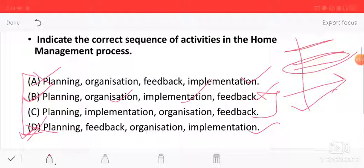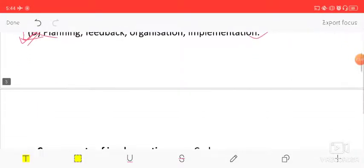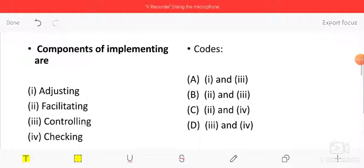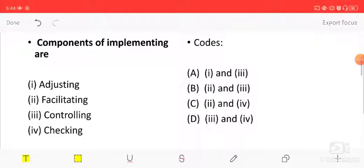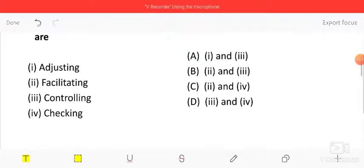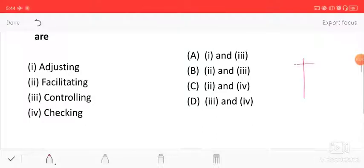Next: component of implementing. After implementation, there are processes and functions, then checking. After implementation we will check, so this is the full option. Cut out. Adjusting we will do when we organize.